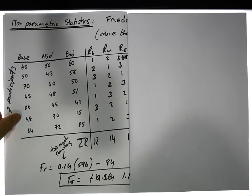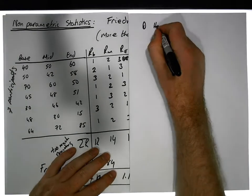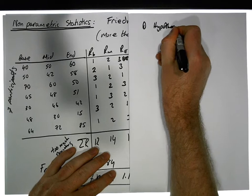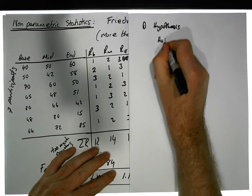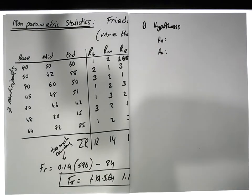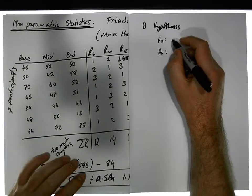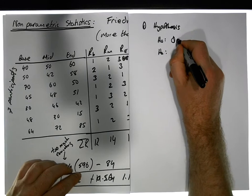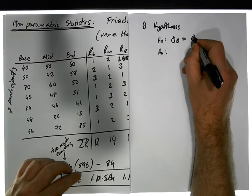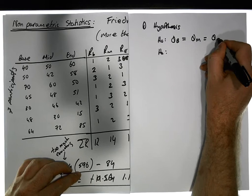The hypothesis test has five stages. Stage one is the hypothesis, which has a null position and an alternative position. The null position is that all of the scores are the same across all of the particular measurement points — the scores at baseline are the same as the scores at midpoint are the same as the scores at endpoint.